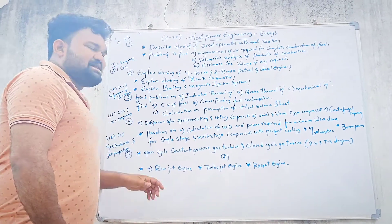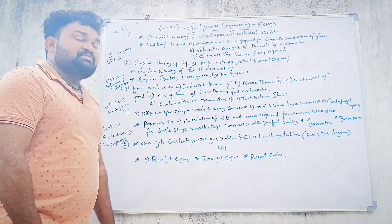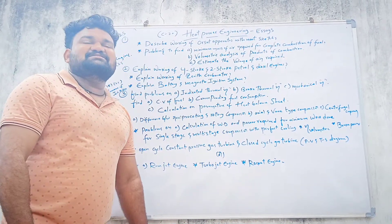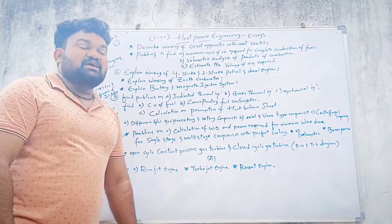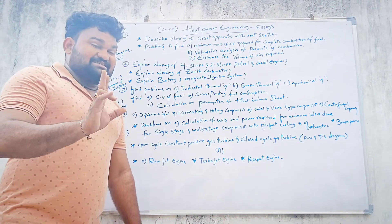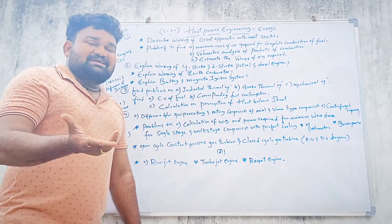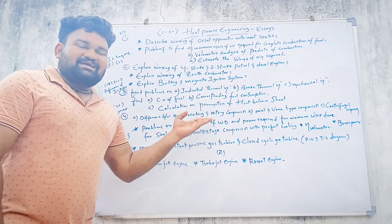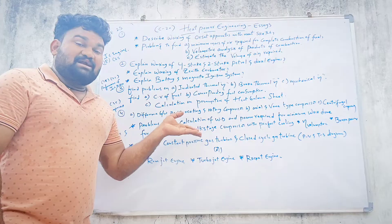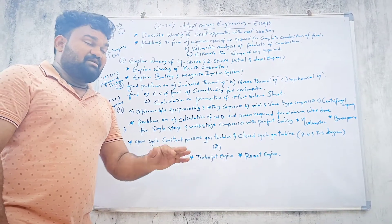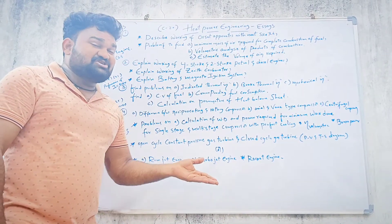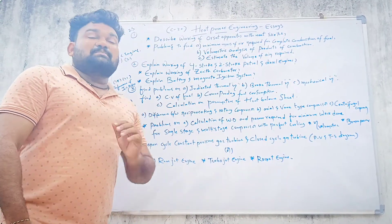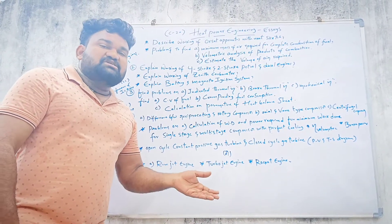Coming to the 4th chapter, Air Compressors. In this chapter there are two topics: single-stage compressor and multi-stage compressor. For the single-stage compressor, the work done and power required formulas are used.